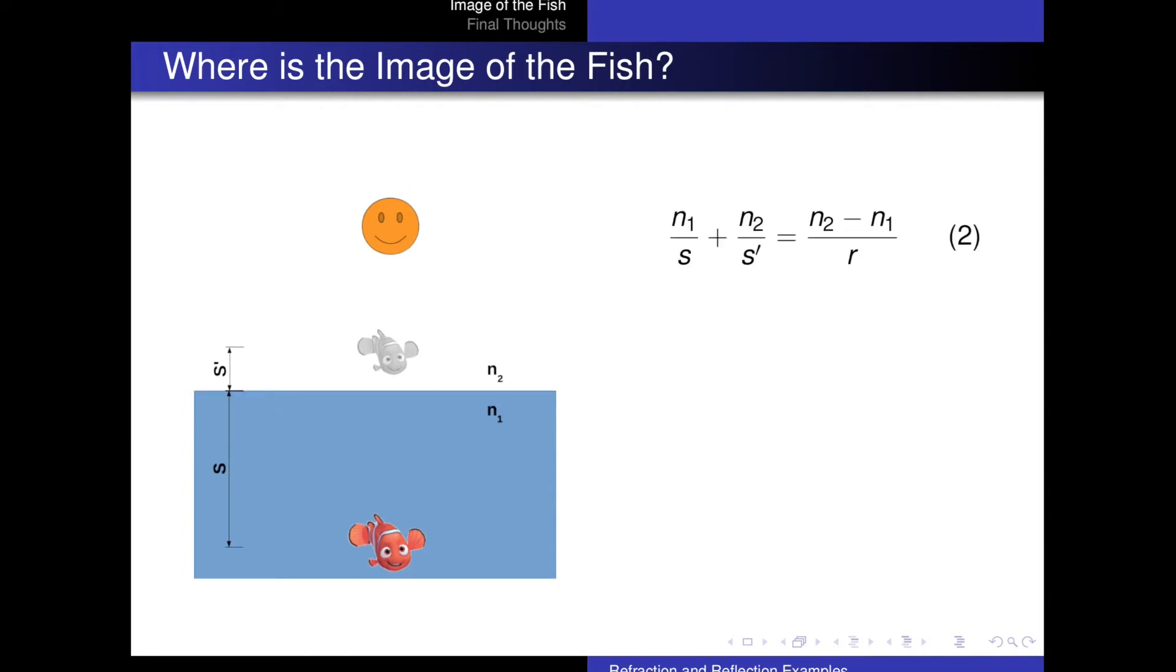So starting off with our equation, we have n1 over s plus n2 over s prime is equal to n2 minus n1 divided by r. And in this problem, we're going to make an approximation. The radius of the earth is very, very large,